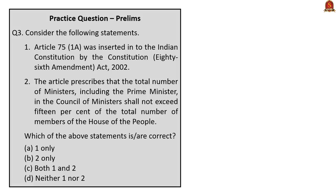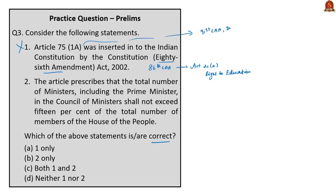Question three has two statements about the Council of Ministers. The first statement is wrong: the 86th Constitutional Amendment Act of 2002 deals with Article 21A regarding the fundamental right to education — it has no connection with the Council of Ministers. Article 75, Clause 1A was inserted by the 91st Constitutional Amendment Act of 2003. The second statement is correct: the total number of ministers including the prime minister shall not exceed 15% of the total number of members of the Lok Sabha. Since only statement 2 is correct, the answer is option B — 2 only.